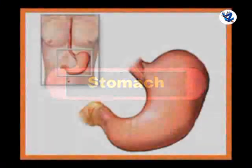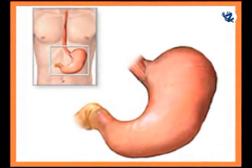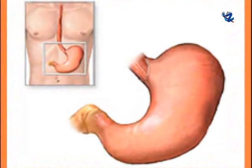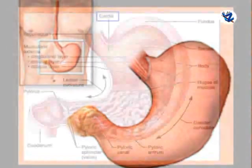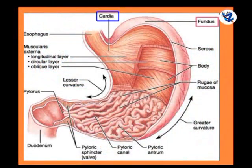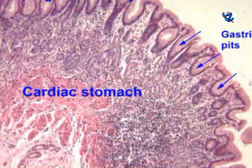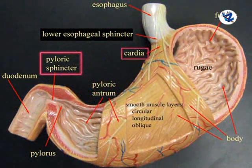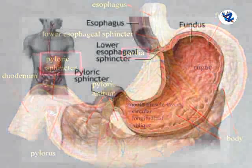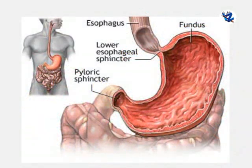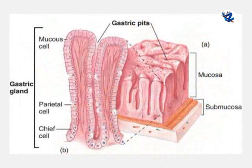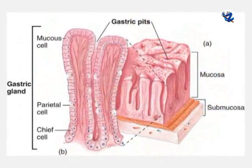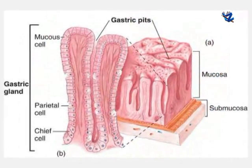Then stomach — it is a sac-like structure situated on the left side of the abdominal cavity. It is J-shaped and has three parts: cardiac stomach, fundus and pyloric stomach. The esophagus opens into the cardiac stomach. The cardiac and pyloric sphincters prevent the backflow of food. The pyloric sphincter regulates the passage of food into the small intestine. Gastric glands present in the inner wall of the stomach secrete gastric juice containing digestive enzymes.